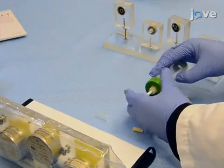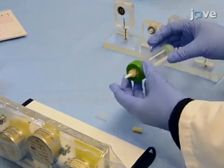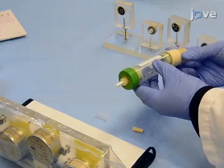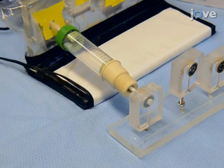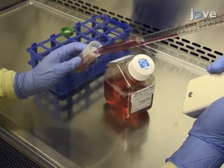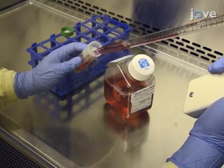Once the construct has matured and it has been removed from its mandrel, fix the construct at both ends to the reservoir and place it in the reservoir assembly as shown here. Fill the exterior of the reservoir with 30 milliliters of culture medium.